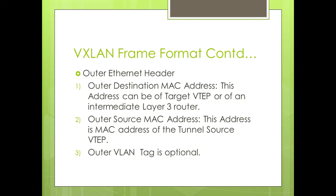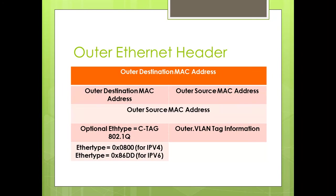The outer Ethernet header contains an outer destination MAC address, which can be the address of the target VTEP or of an intermediate Layer 3 router. The outer source MAC address is the MAC address of the tunnel source VTEP. The outer VLAN tag is optional. The EtherType field is set to 0x0800 if the next header is an IPv4 header, or 0x86DD if the next header is an IPv6 header.